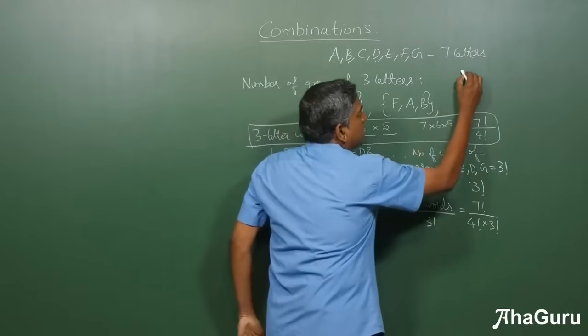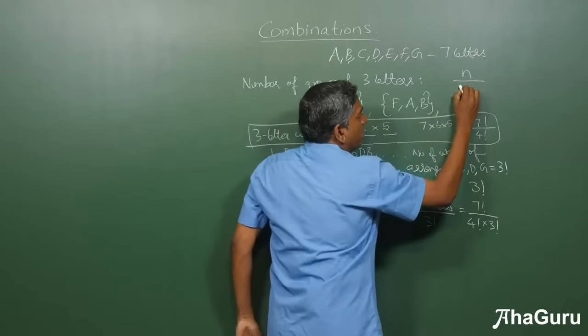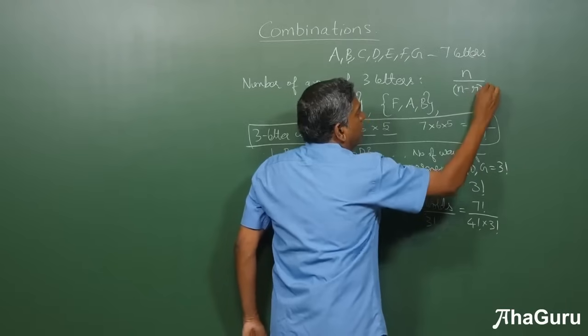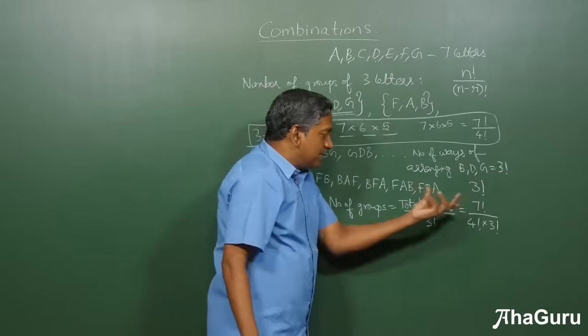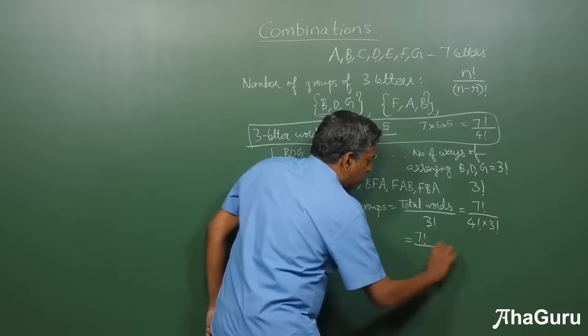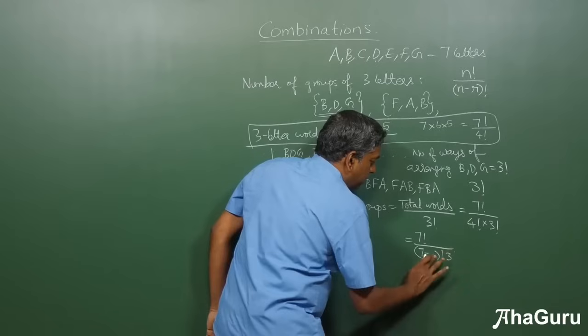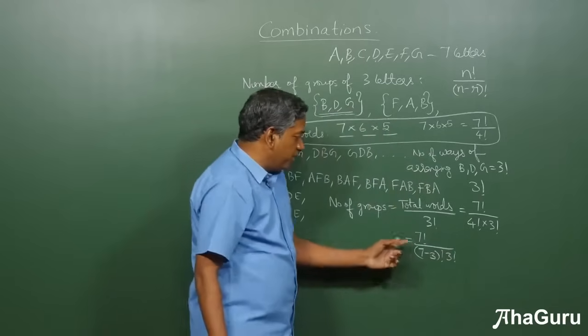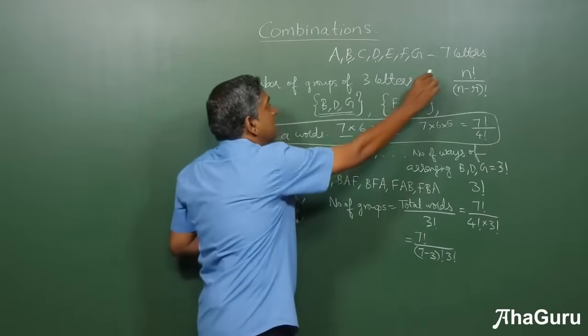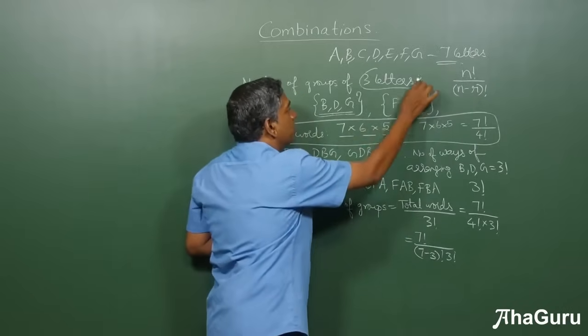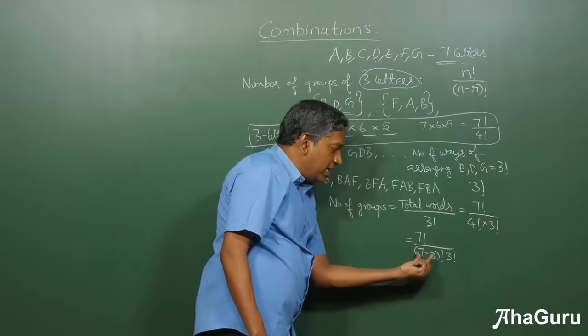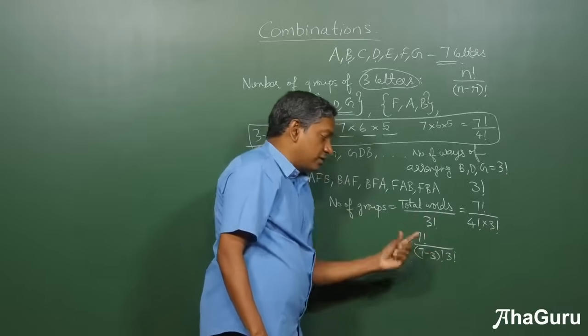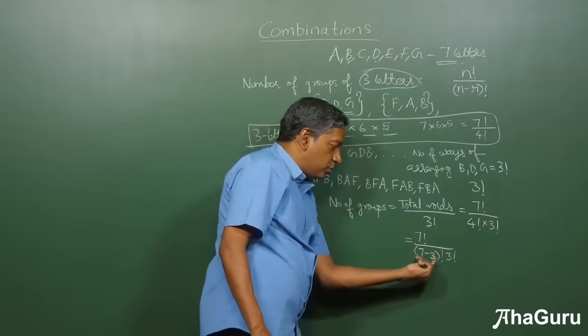Remember, for n objects, if you are choosing r and arranging, or if you are arranging r out of them, it's n factorial by n minus r factorial. This is the nPr, right? So, this is the same as 7 factorial by 4 is nothing but 7 minus 3 and 3 factorial. So, if you have totally 7 letters, you want groups of 3 letters. The number of groups is 7 factorial by 3 factorial and then 7 minus 3 factorial. 7 minus 3 is 4, so it's 4 factorial.